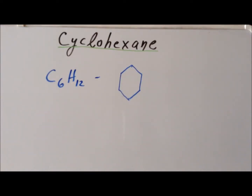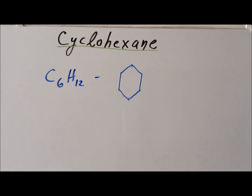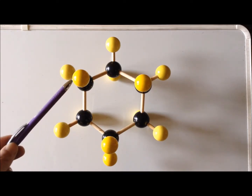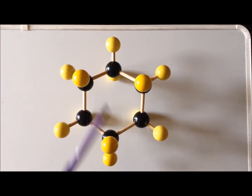In this video, we are going to examine the three-dimensional structure of cyclohexane and substituted cyclohexanes. Cyclohexane is a saturated alkane with the chemical formula C6H12, which consists of a hexagonal ring, so it is a cyclic alkane. Here is a model of cyclohexane showing hydrogen atoms as yellow spheres and the carbon atoms of the six-membered ring as the black spheres.